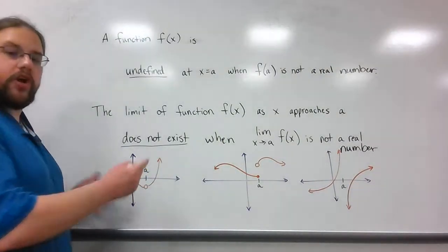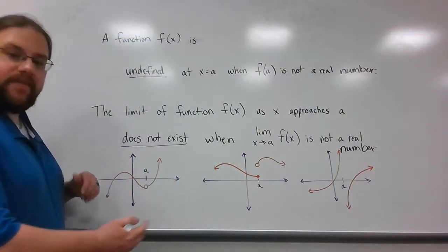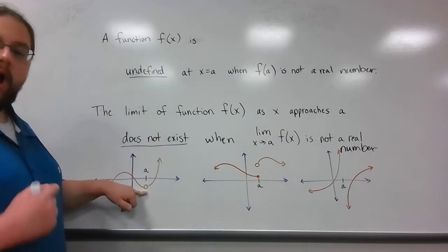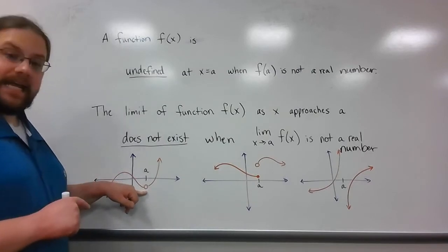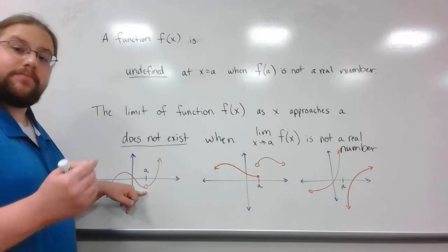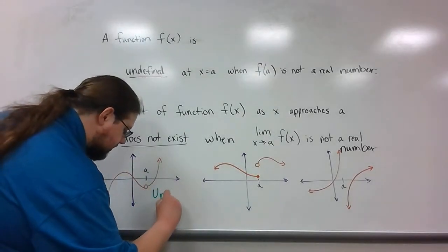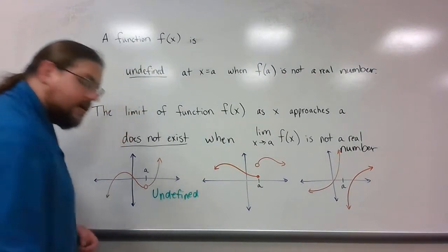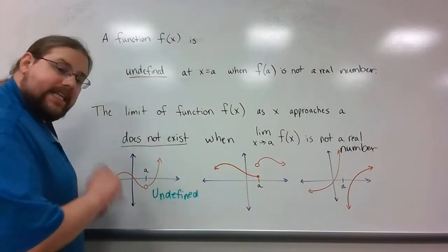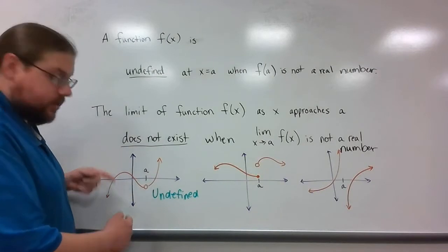So right now I have this nice smooth curve. We'll call it f(x). And right now I have an open dot here at a. Okay, now this case means that the function is undefined at a. But if I look at the limit as I approach a from both sides,